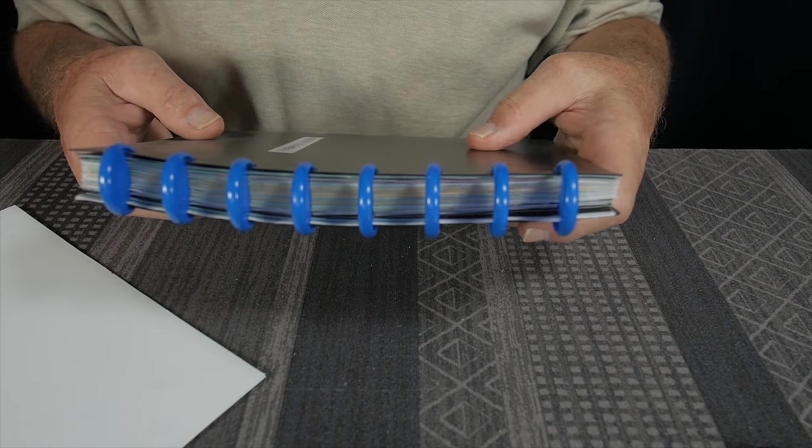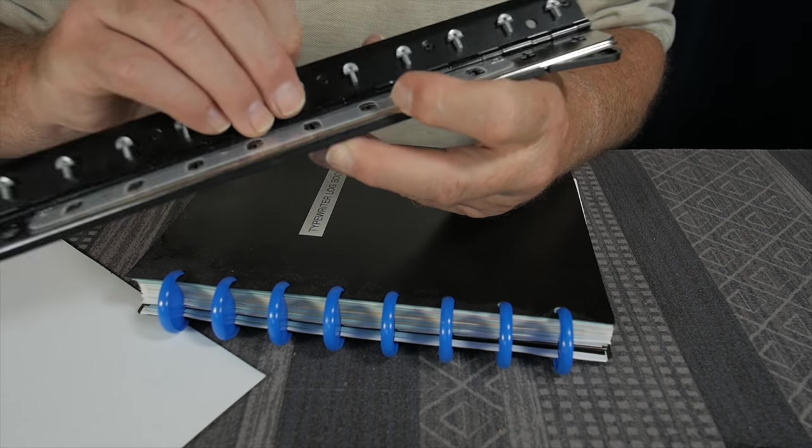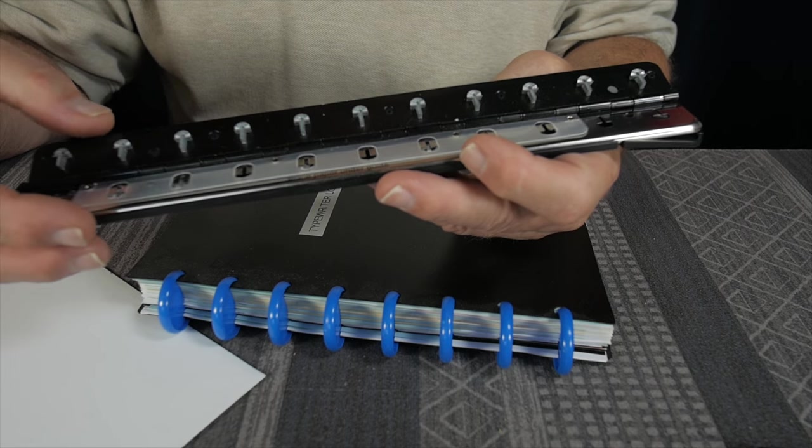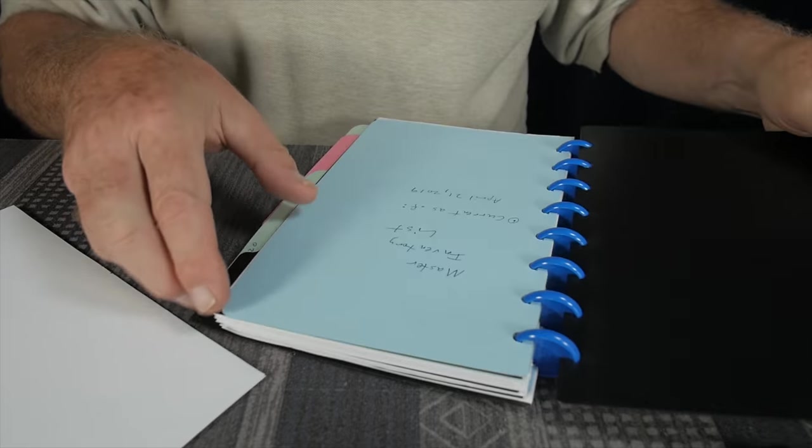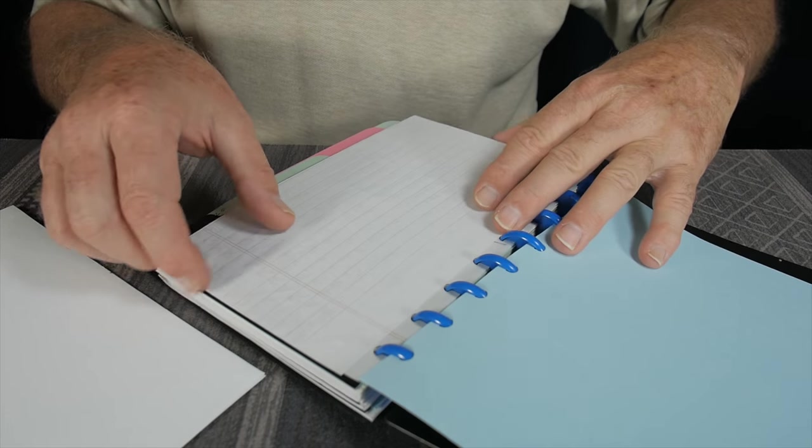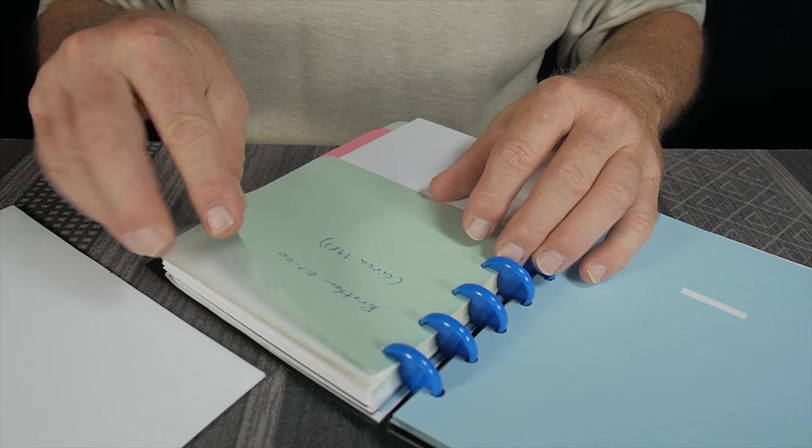And this is where I started thinking about the Arc, which is one brand. This is the disc binding system, and they make some punches for it. This is the inexpensive punch. I have a fancier punch also.